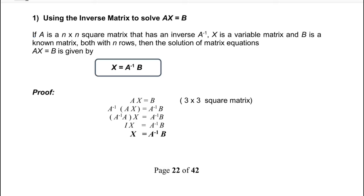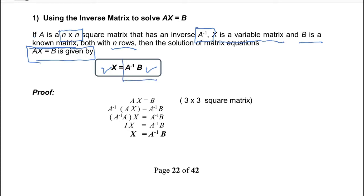Using the inverse matrix to solve AX equals B: if A is any n by n square matrix that has an inverse written as A inverse, X is the variable matrix of unknowns x, y, z, and capital B is a known matrix — both with n rows — then the solution is X equals A inverse multiplied by B. The arrangement is important; the inverse of the matrix comes first, then you multiply it with the known matrix.